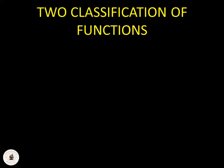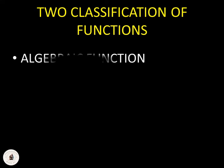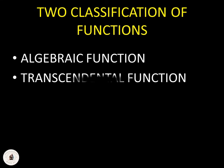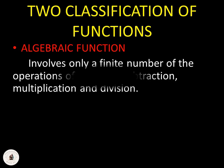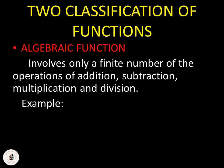We have two classifications of functions: the algebraic function and the transcendental function. An algebraic function involves only a finite number of the operations of addition, subtraction, multiplication, and division. For example, f(x) = x² - 2x + 2.